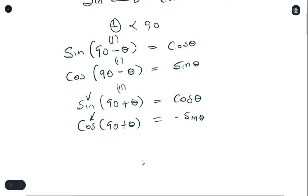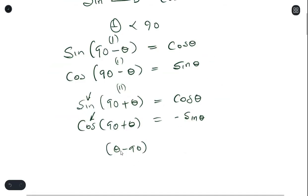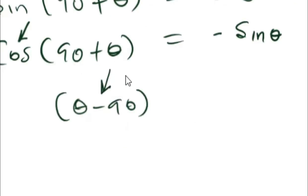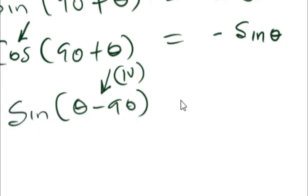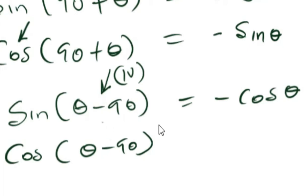Another way to change from sine to cosine is theta minus 90. Remember, theta is less than 90 and it's in the first quadrant, so the final answer will be negative — this reminds us of the fourth quadrant. Sine is negative in the fourth quadrant, so the equivalent value is negative cosine theta. However, for cosine, cosine is positive in the fourth quadrant, so the equivalent value would be positive sine theta.